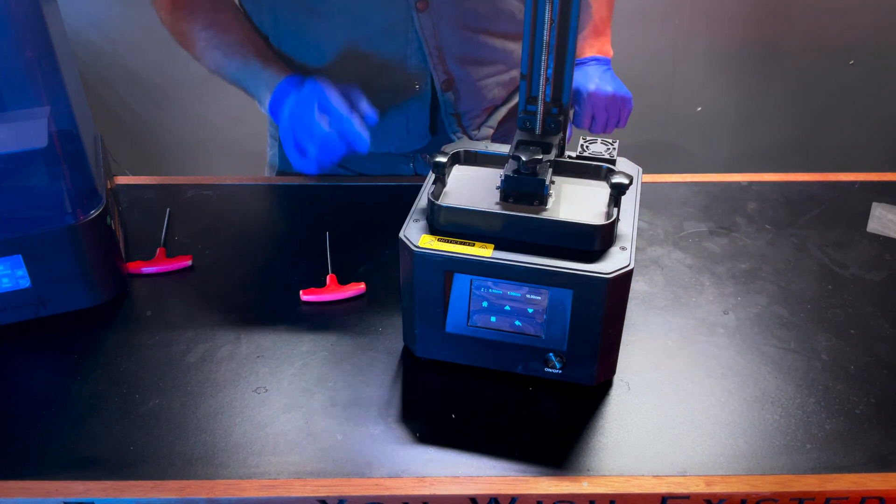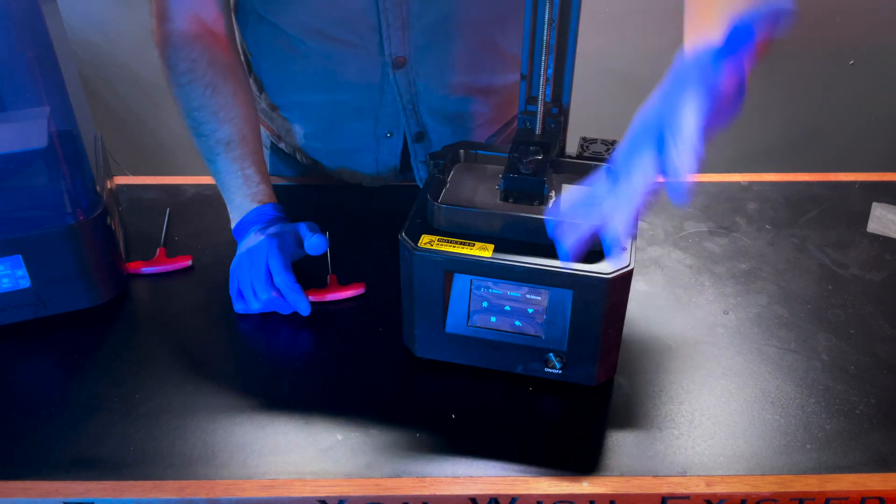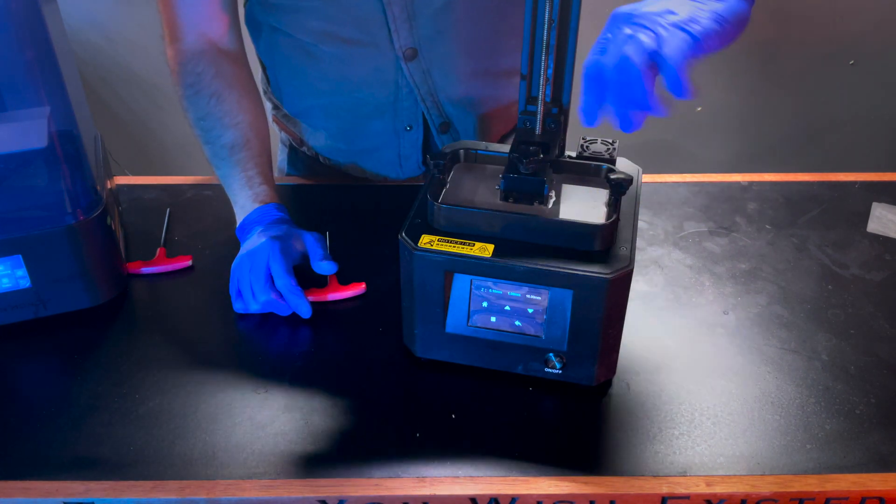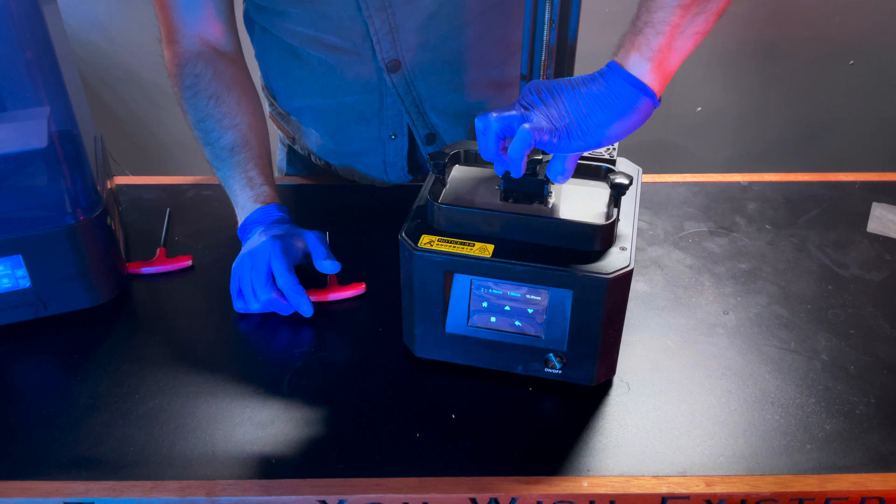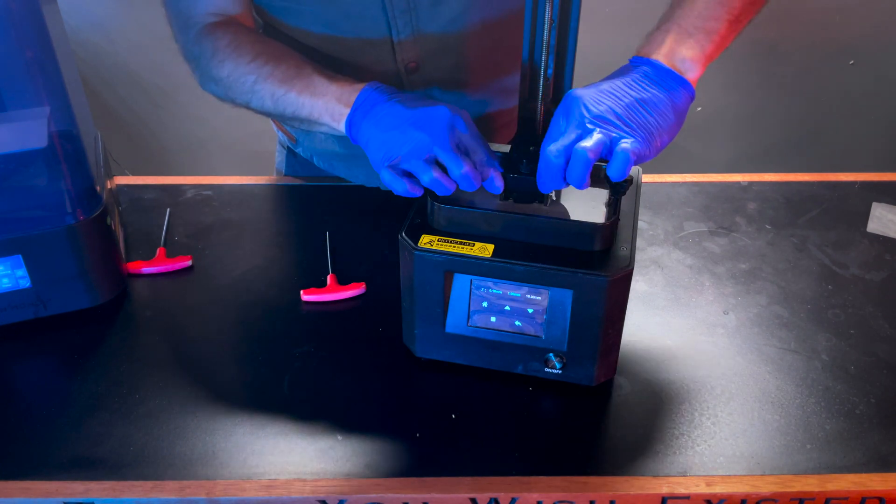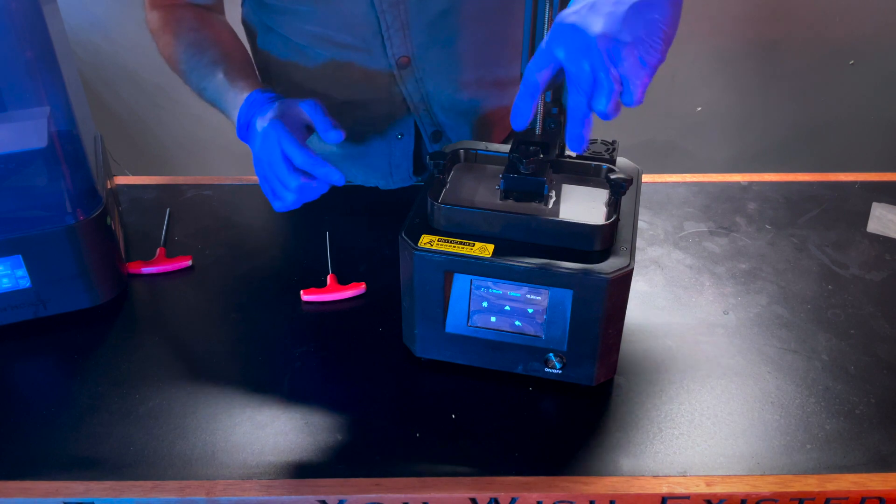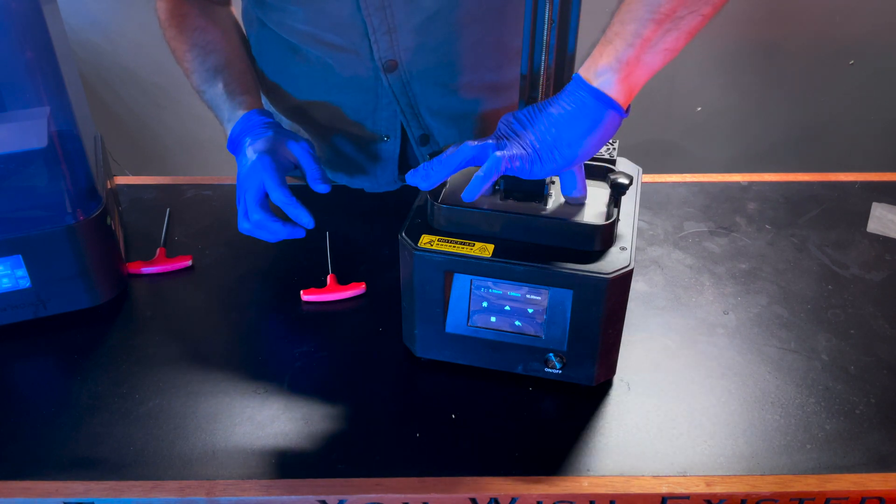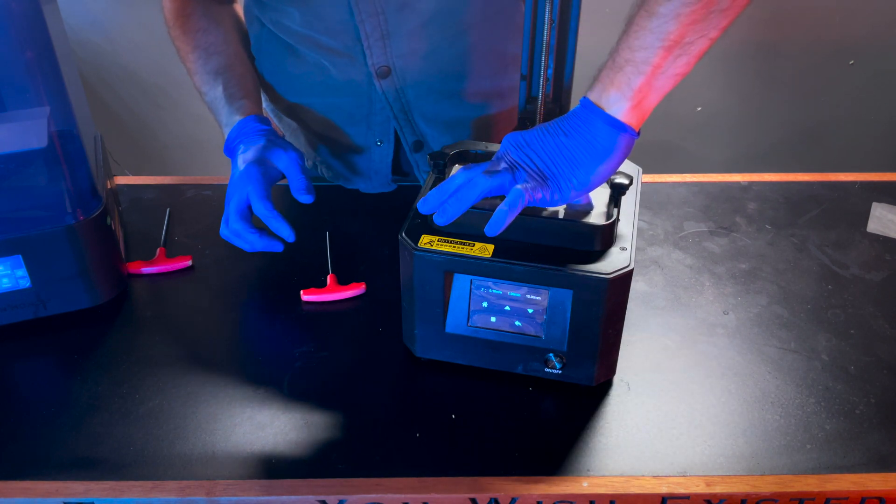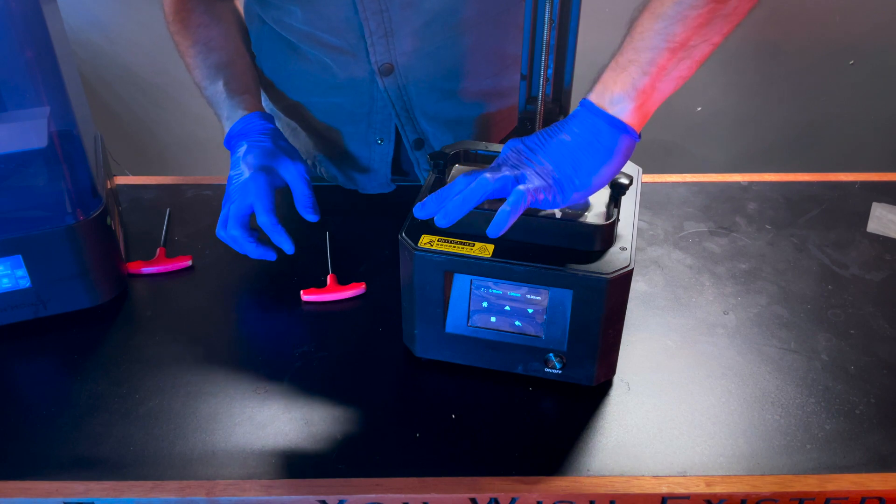All right guys, once it has stopped moving, it's a good idea to have gloves on for this portion. If your build plate has arms that go up the sides, you can use those. However, if it does not, you will have to use two fingers to flatten your build plate against the LCD screen.